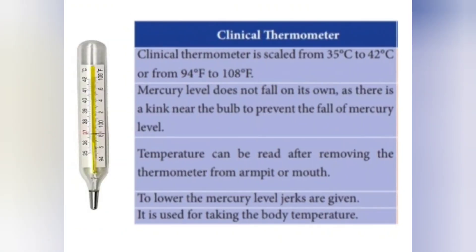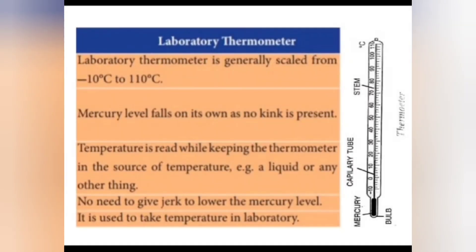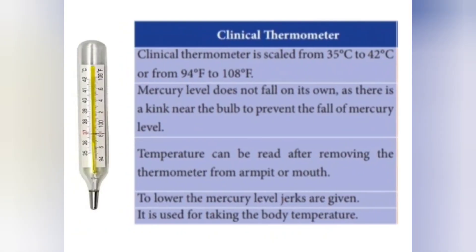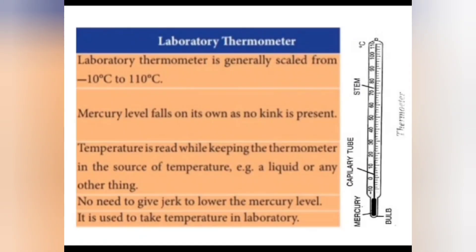For the clinical thermometer, jerks are given to lower the mercury level, and then it must be placed in antiseptic solution before reuse. For the laboratory thermometer, no jerk is needed as there is no nick — the mercury falls on its own. The clinical thermometer is used for measuring human body temperature, while the laboratory thermometer is used in labs, schools, and by scientific researchers.